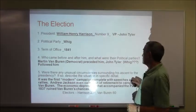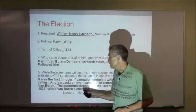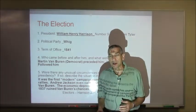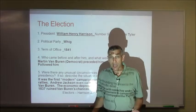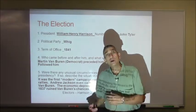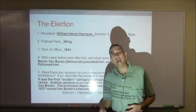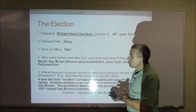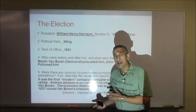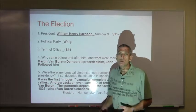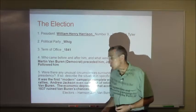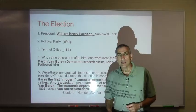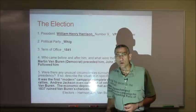Any unusual circumstances surrounding his ascent to the presidency? It was the first modern campaign in which the candidates actually got out there and did a lot of campaigning for themselves. Plus he was trying to defeat an incumbent who should have been very popular, but the economic depression that occurred as a result of the Panic of 1837 really doomed Van Buren's presidency. The electoral count: Harrison had 234 and Van Buren had 60, so it was not even a horse race.